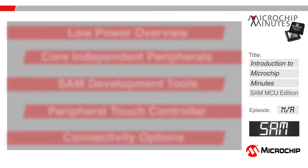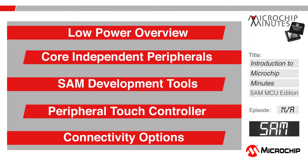In this video series, I will cover several different topics. The first topic I will cover is a low-power overview, where I will focus on the different aspects of the SAM products that are designed for ultra-low-power operation. The second topic I will cover is the core independent peripherals, in which I will focus on peripherals that operate independent of the core, such as the event system and peripheral touch controller.